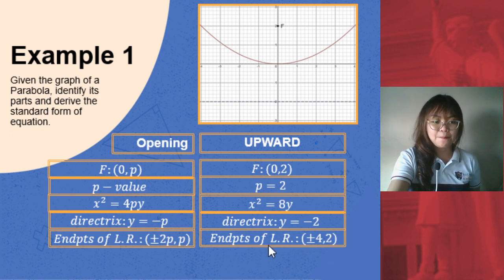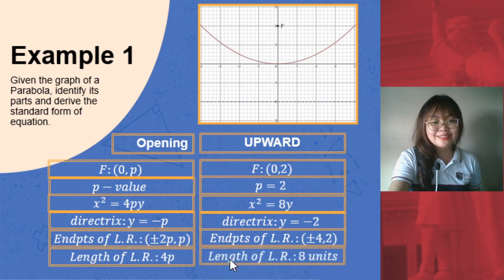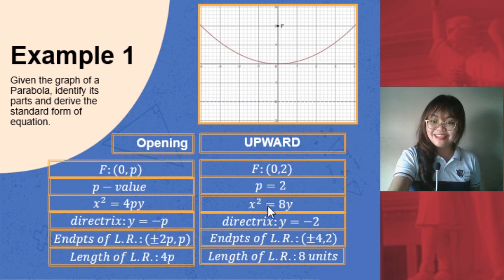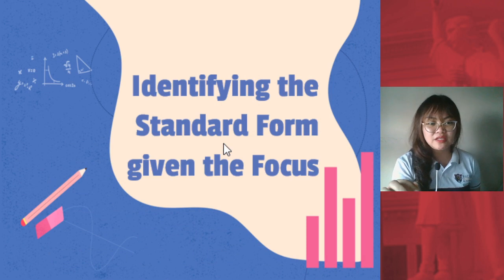Last is the length of the latus rectum which is 4p. So we have 2 times 4, we now get 8 units. Don't forget your units. Essentially the latus rectum measure is already visible from your standard form of equation. That's it for our first example. See you on the next video identifying the standard form given the focus. Thank you so much.